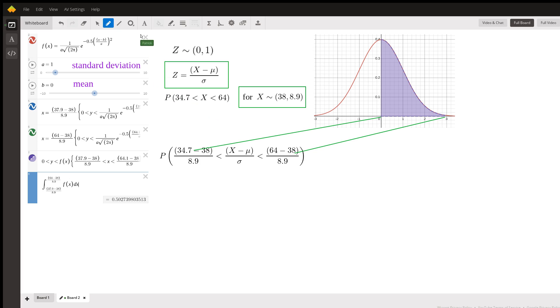We're looking for this probability, right? Probability that X is between 34.7 and 64.